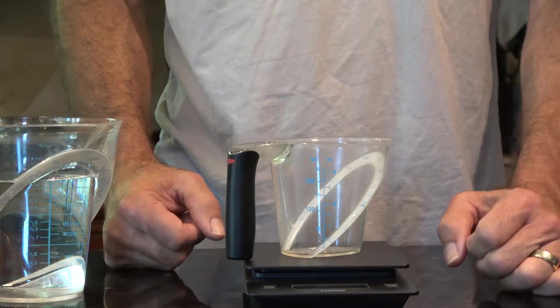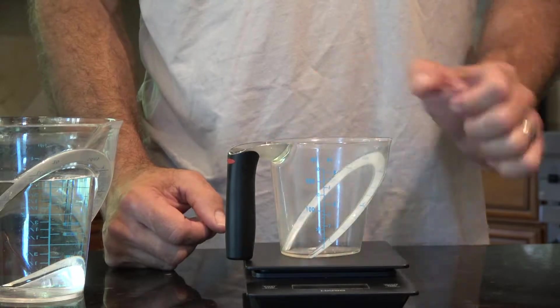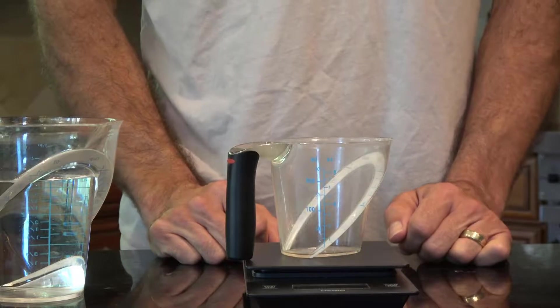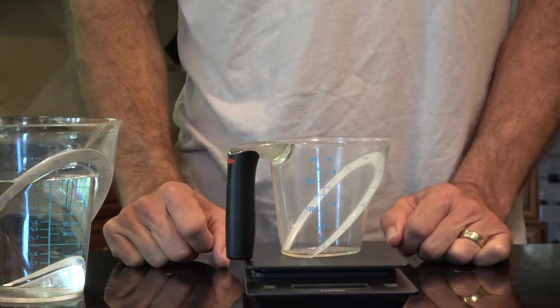If your scale doesn't have that, then record the weight of the cup first, then the cup plus the water, and then subtract the weight of the cup. So you just want to know the weight of the water.